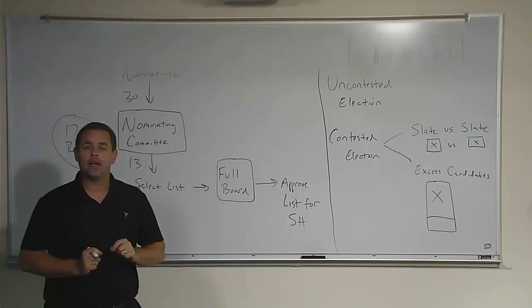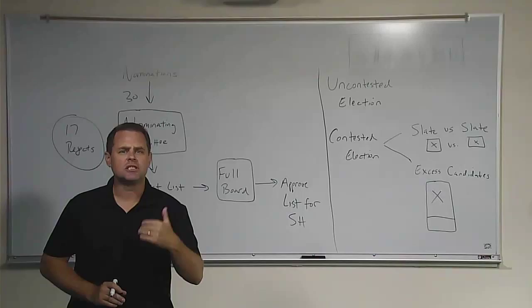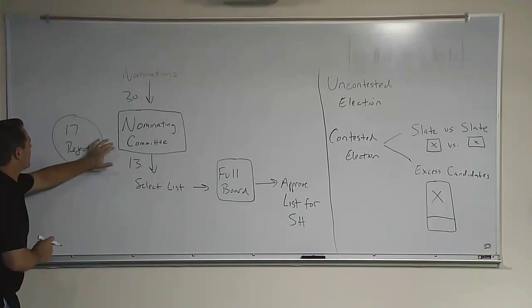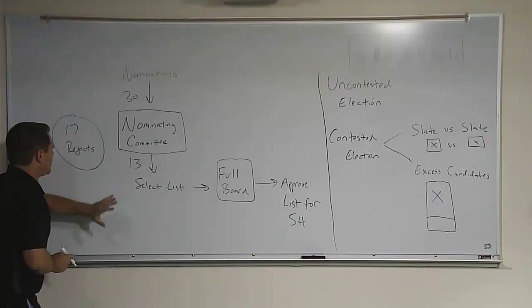It's these 17 rejects who never really, rejects is not a nice term, I mean people who have been rejected by the nominating committee, it's these 17 rejects who really are, they succumb to the power of the nominating committee. They just don't have any other choices. These 13, or whatever the number is, goes to the full board.